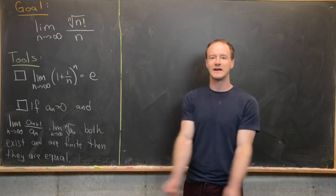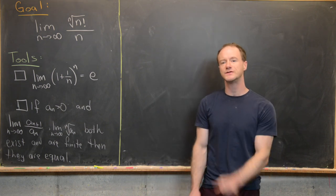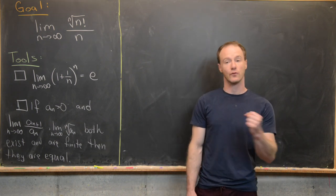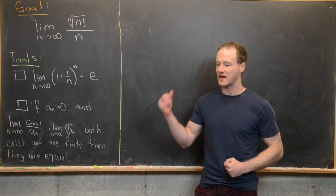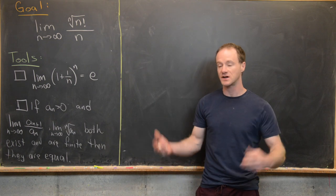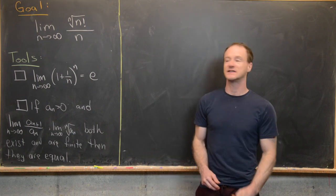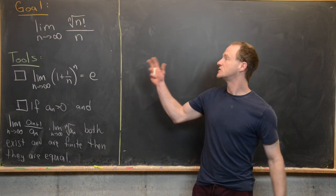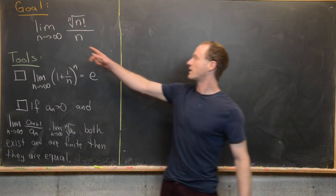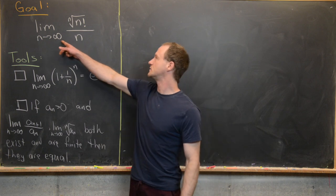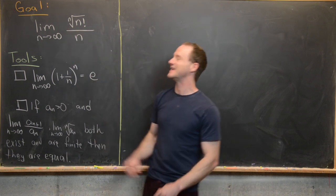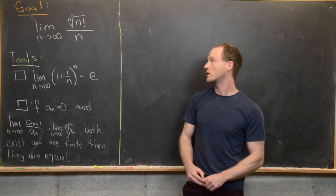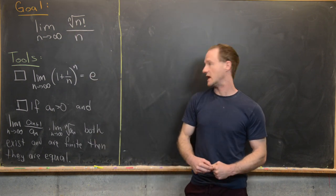Here we're going to evaluate a nice little limit using a result that is tied to the ratio test and the root test from testing series for convergence. We want to look at the limit as n goes to infinity of the nth root of n factorial over n.